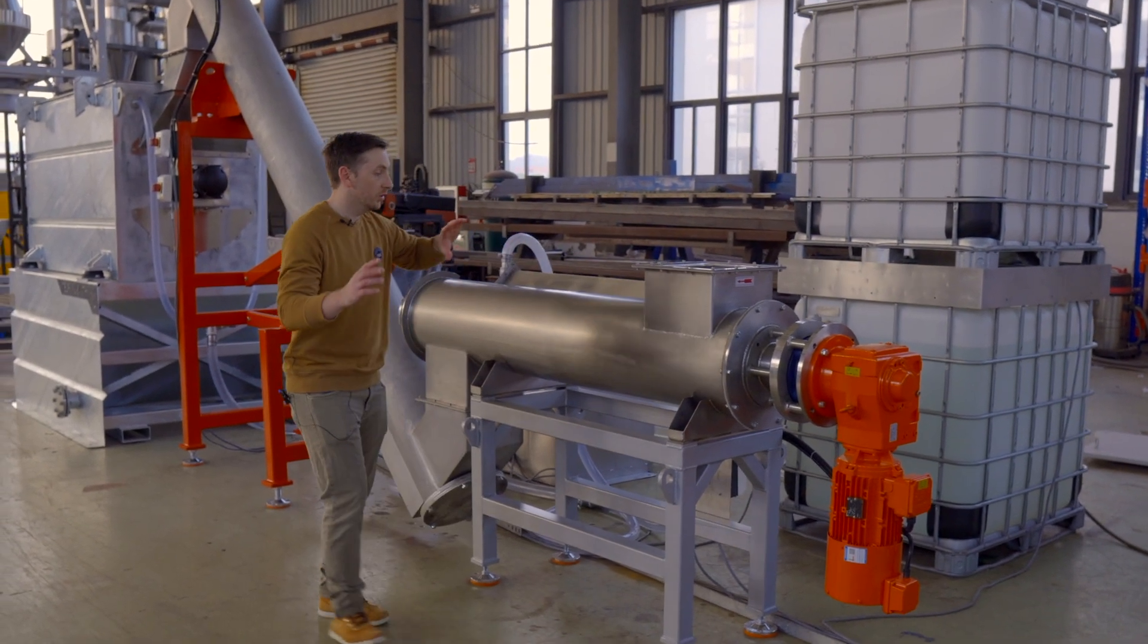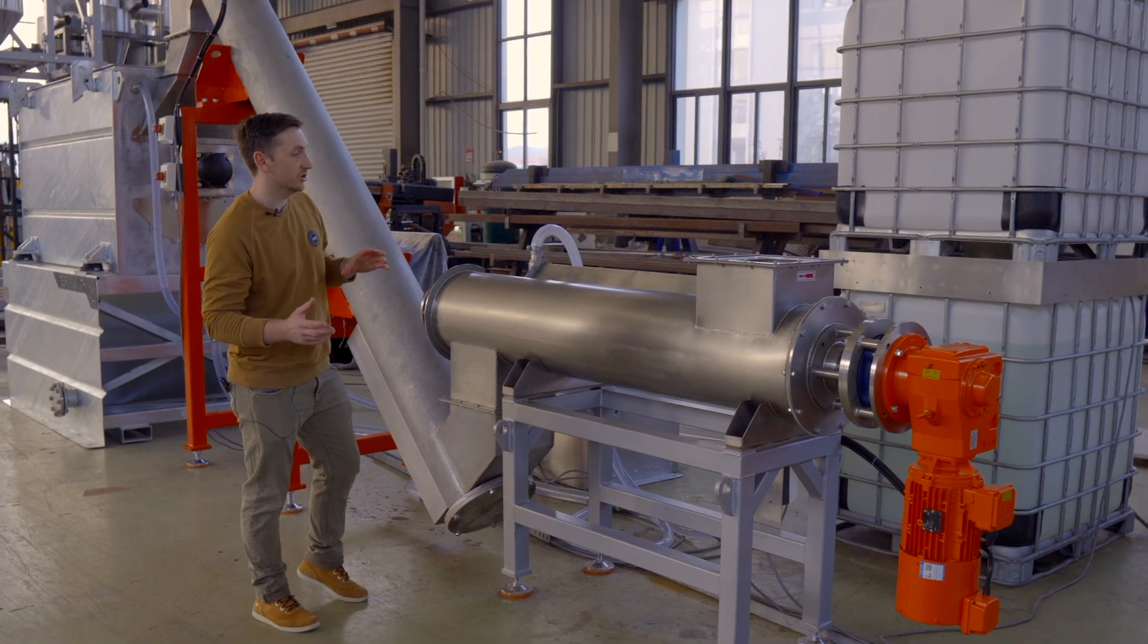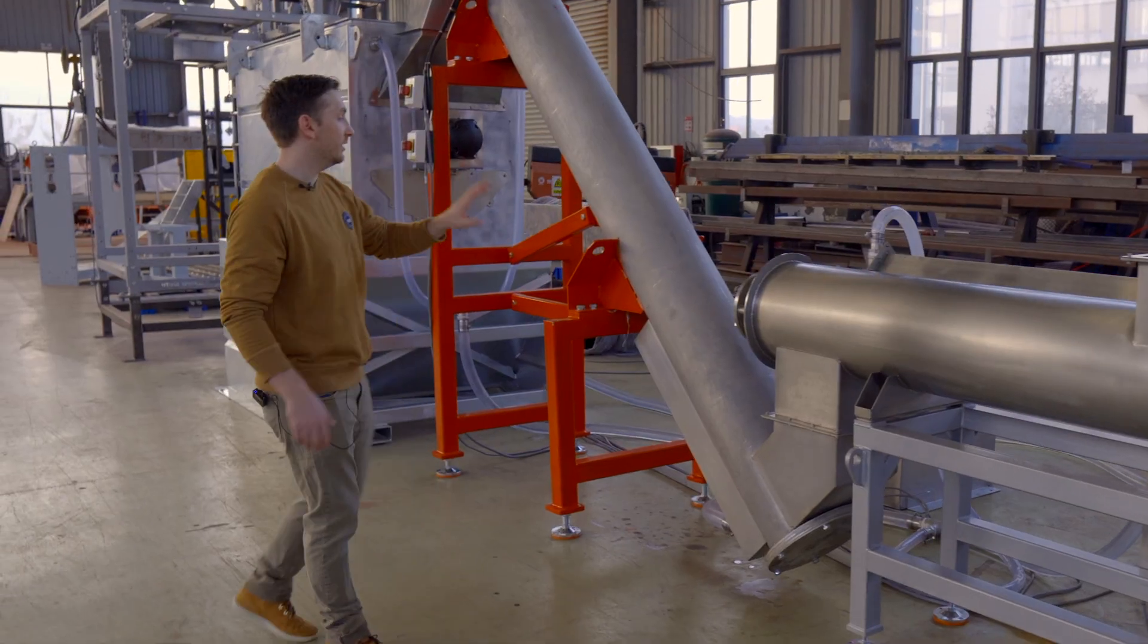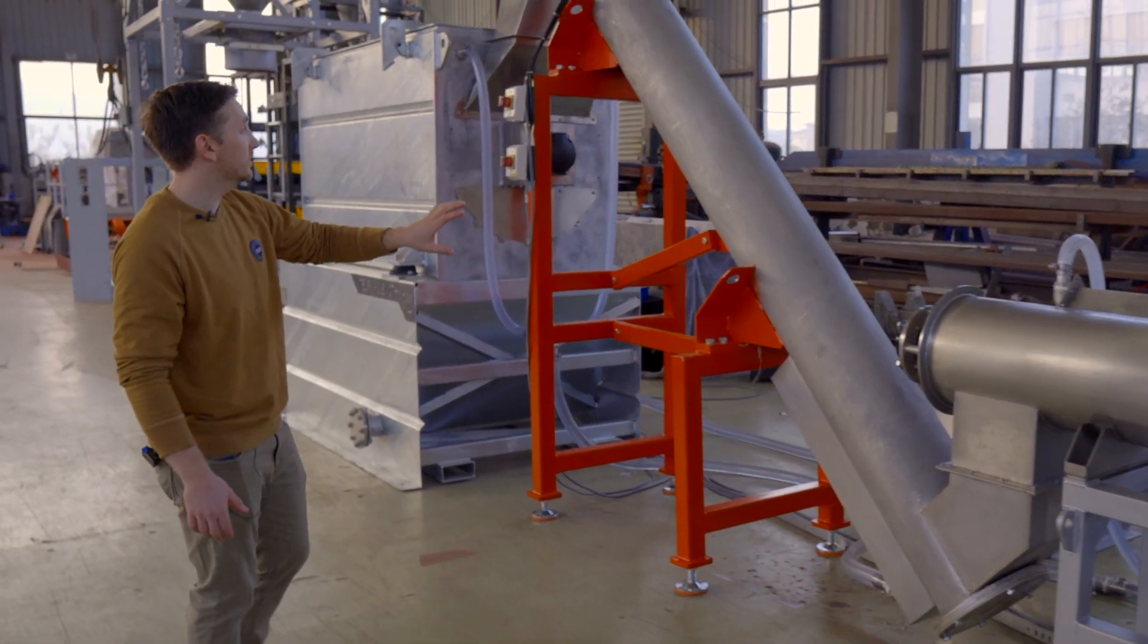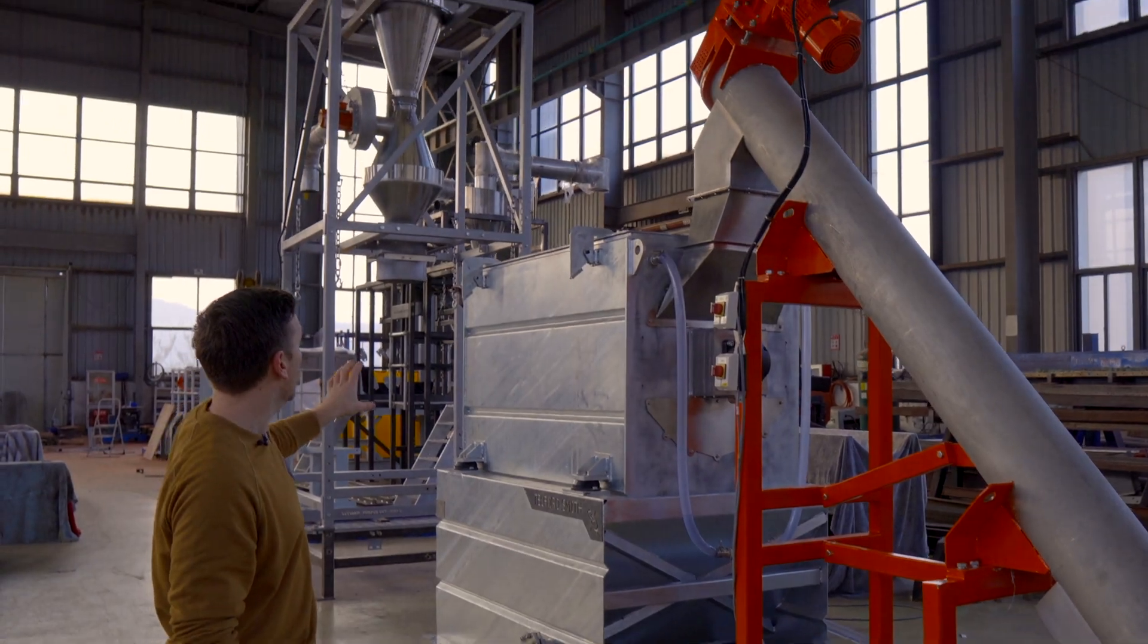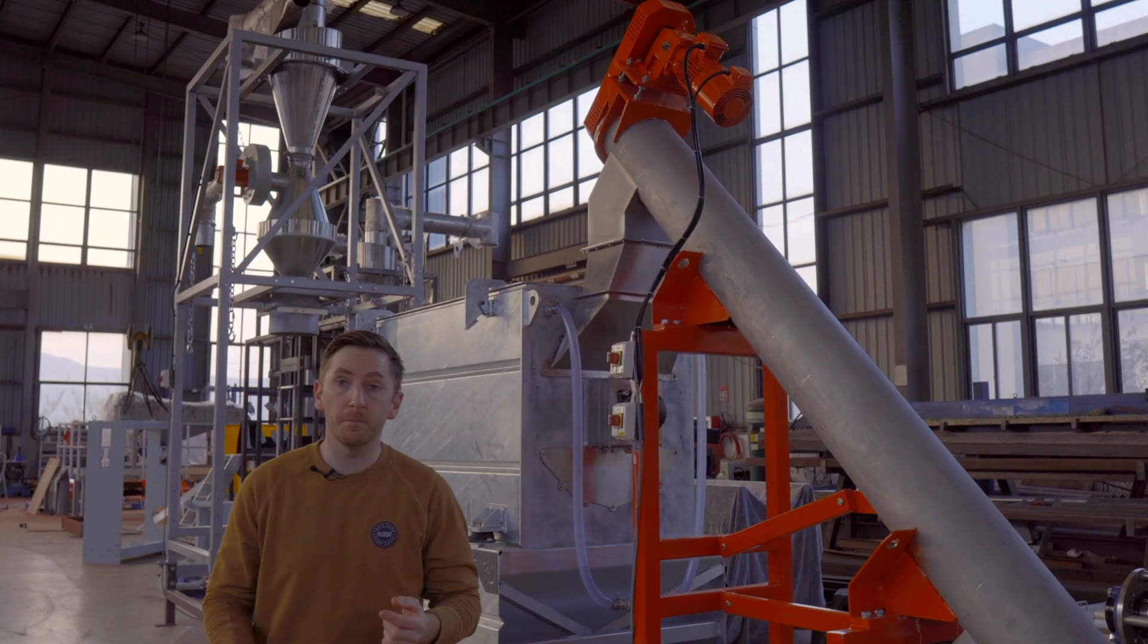The material feeds into this, is spun around and washed, has a rinsing bar in here, enters into a drainage auger system, and then into our mechanical dryer. After the mechanical dryer you'll see we've got a bagging system.